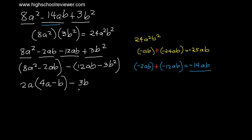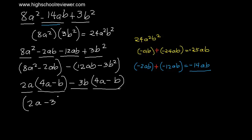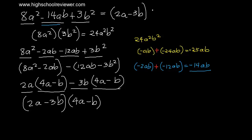Both groups share the common factor 4a minus b. We combine the outer terms 2a and negative 3b, giving 2a minus 3b. So we have quantity 2a minus 3b multiplied by quantity 4a minus b. Therefore, 8a squared minus 14ab plus 3b squared in factored form is the quantity of 2a minus 3b multiplied by the quantity of 4a minus b. This is our final answer.